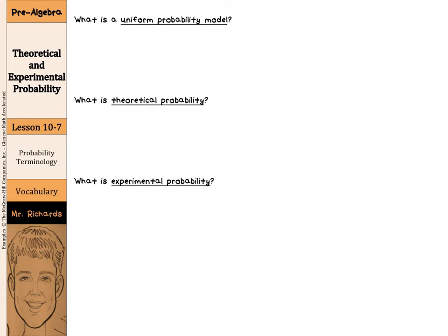We first have some probability terminology that we need to define, and the first is that of the uniform probability model. This means that each outcome has an equal probability of occurring.